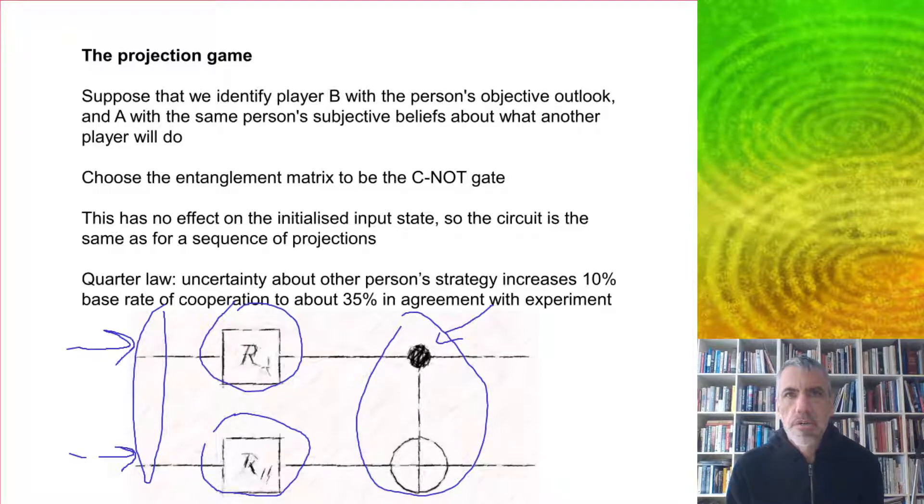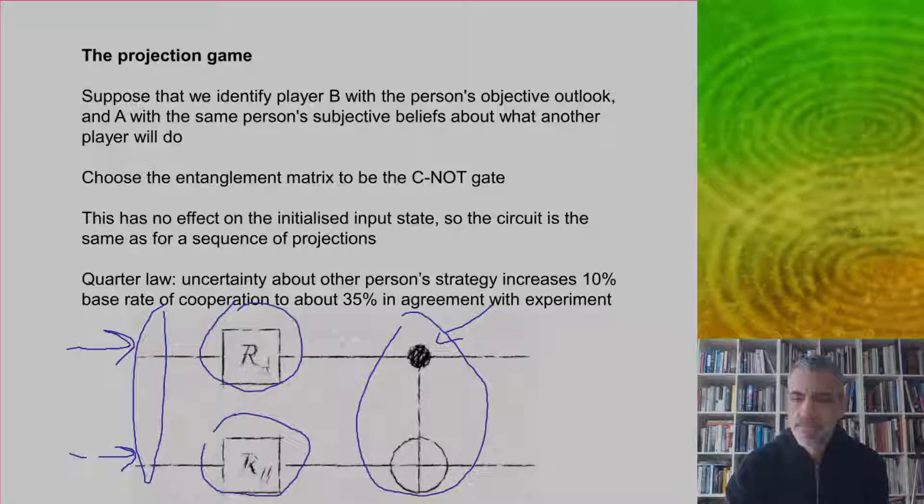The uncertainty about the other person's strategy is going to take the base rate of cooperation, which is 10 percent when you know what the other person is going to do, and add about a quarter to that, which would bring you to around 35 percent expected to cooperate. This is in good agreement with experiment.